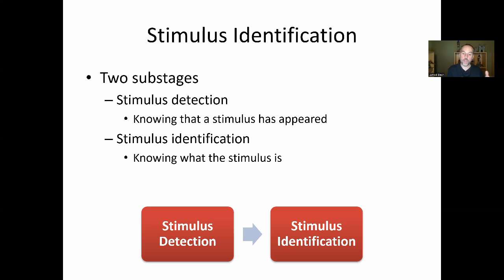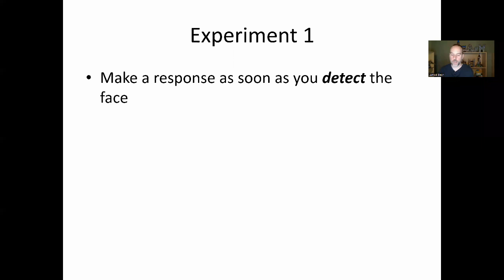We go through detection before identification. The second sub-stage 'stimulus identification' unfortunately has the same name as the overall stage, which is confusing. Let's do an experiment to feel the difference between detection and identification. In experiment one, make a response as soon as you detect a face on the screen — you don't have to know whose face it is, just that there's a face. Think about how long it takes you to make that response.